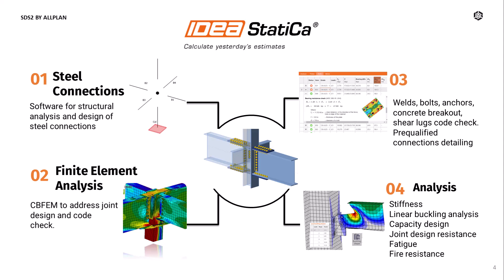We have capacity design, which is really meant for high seismic design. Joint design resistance allows you to understand the capacity of the connection — so you can model an existing connection and understand that it can take, say, 150 kips. We also do fatigue analysis, as well as fire resistance based on the Euro code. That's something becoming more prevalent, and even the latest AISC code is referencing Euro code.